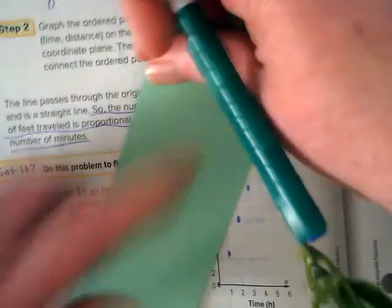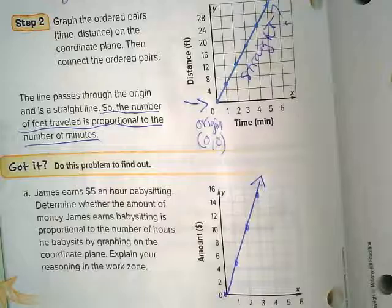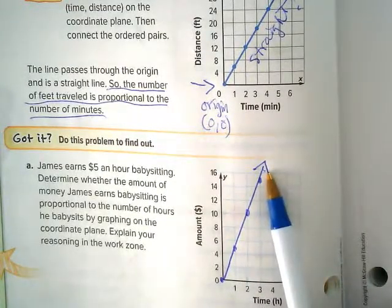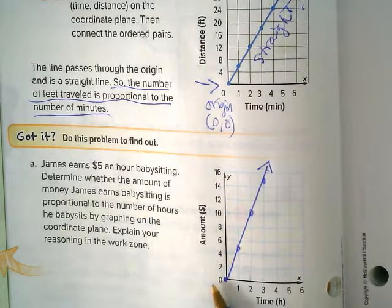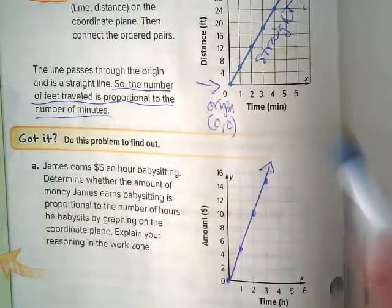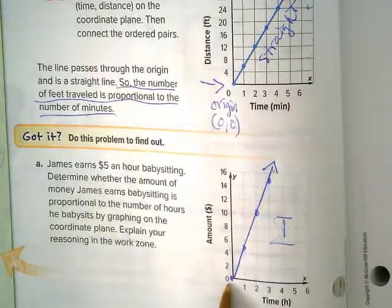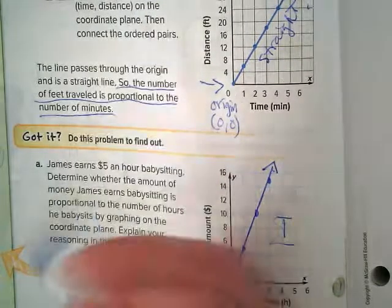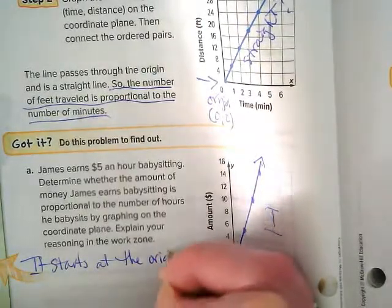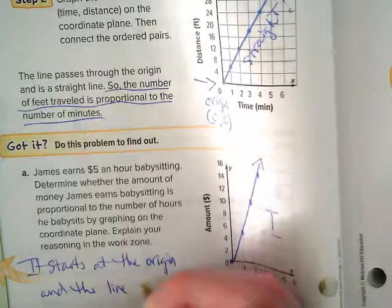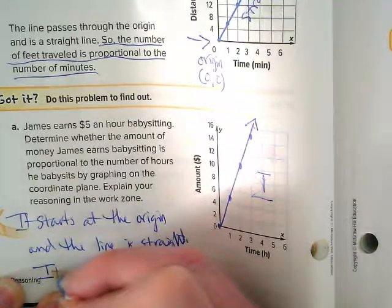I'm going to use this straight edge to make sure my line is straight. And yes, we have a straight line. Could he babysit more hours? Yeah. So, go ahead and put an arrow because your line could go on and on and on. Are we going to go down into the negatives? He's not going to owe money. He's either going to make money or he's going to make zero money, right? That's why our graph is only showing what we call quadrant one. So, explain your reasoning in the work zone. Well, what's our reasoning? It starts at the origin and the line is straight. Are we saying yes or no to this being proportional? Yes. Let's make that a statement. It is proportional.